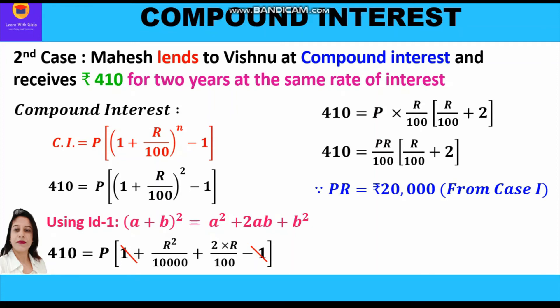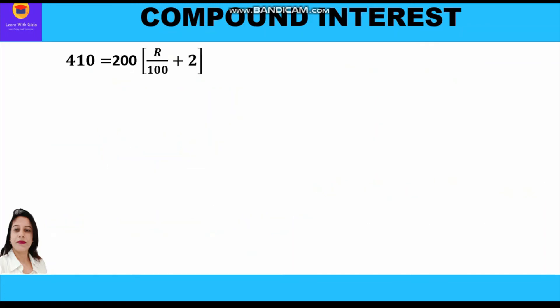We substitute the value PR = 20,000, writing: 410 = (20,000/100) × (R/100 + 2). The zeros cancel and we get: 410 = 200 × (R/100 + 2).